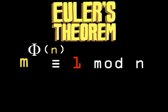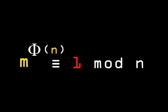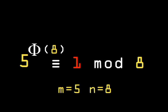m to the power of phi n is congruent to 1 mod n. This means you could pick any two numbers such that they do not share a common factor. Let's call them m and n. Say, m equals 5 and n equals 8.